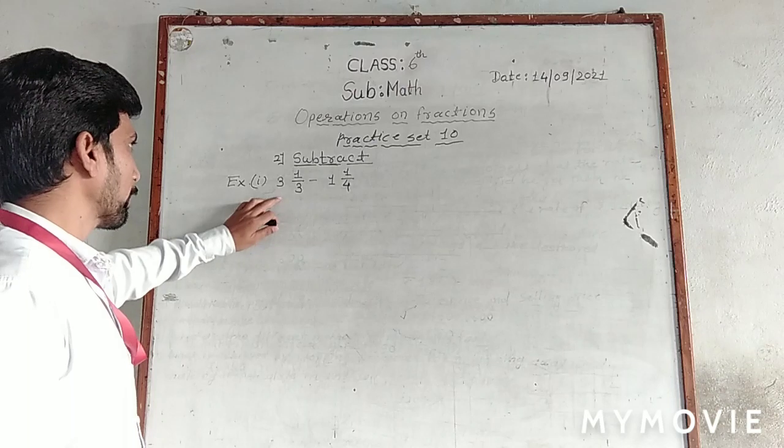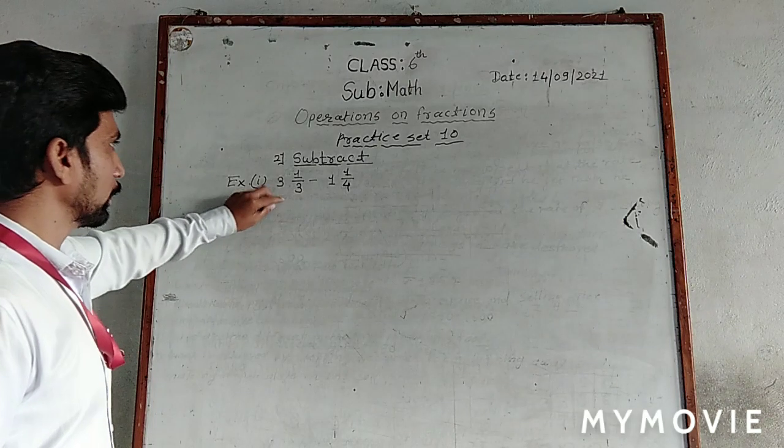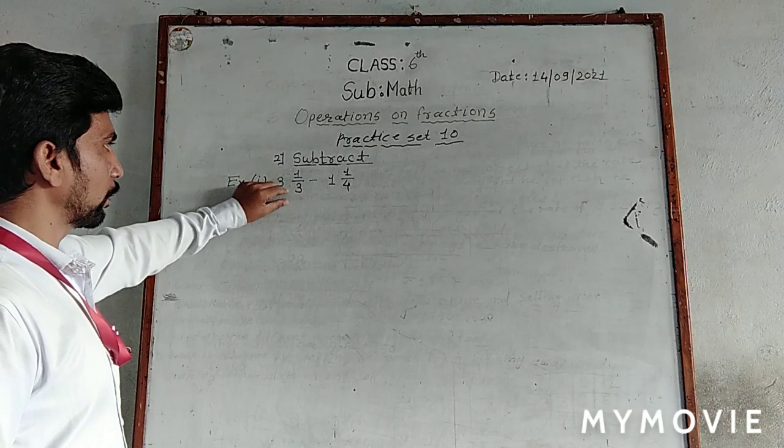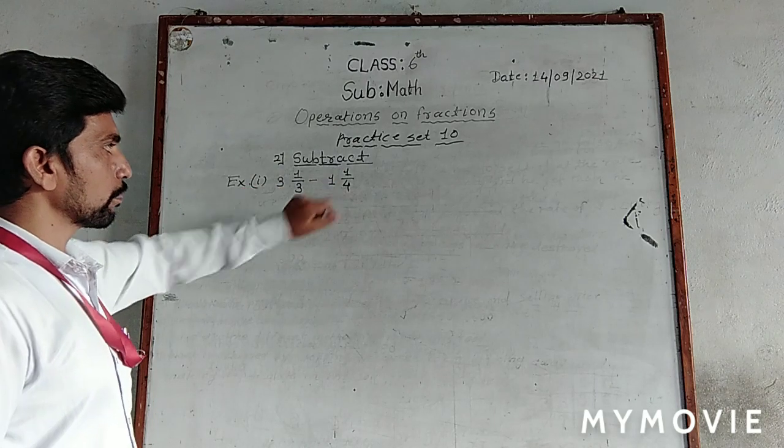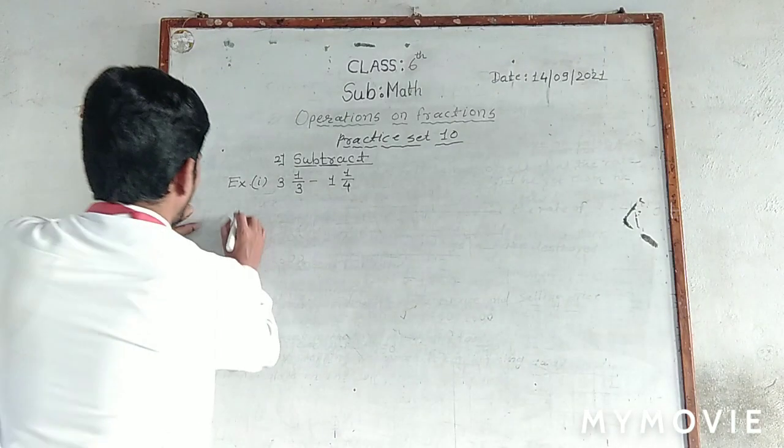First, let's look at the example: 3 integer 1 upon 3, minus 1 integer 1 upon 4. How do we solve operations with mixed fractions?